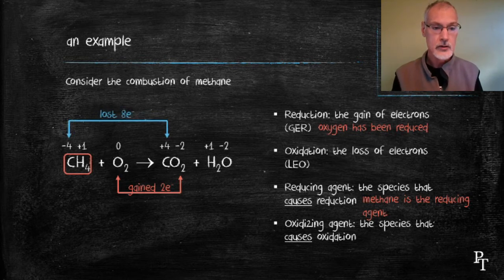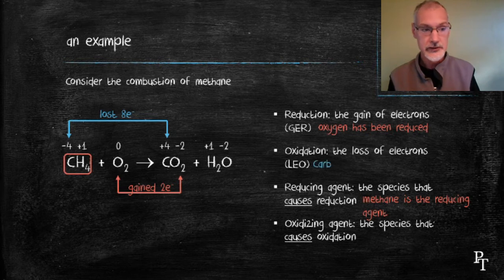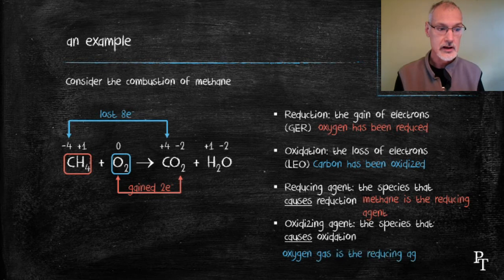Looking at the carbon, to go from -4 to +4, it lost eight electrons, so it's been oxidized. The substance that caused it, the oxidizing agent in this case, is oxygen itself.